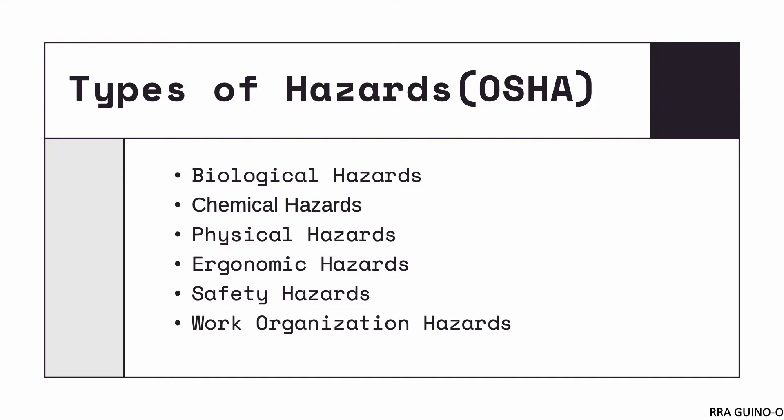Let's have a short recap on the different types of hazards identified by the Occupational Safety and Health Administration. These are biological hazards, chemical hazards, physical hazards, ergonomic hazards, safety hazards, and finally, work organization hazards.